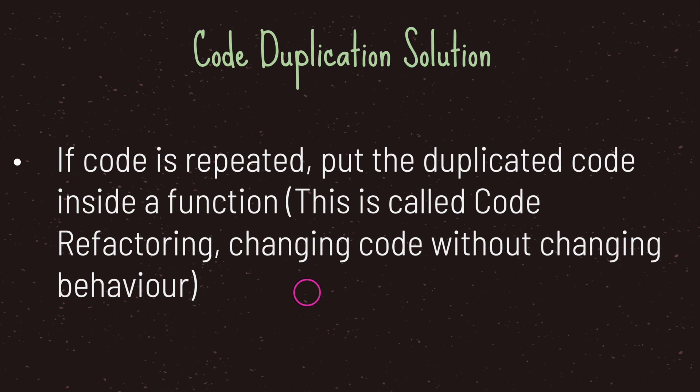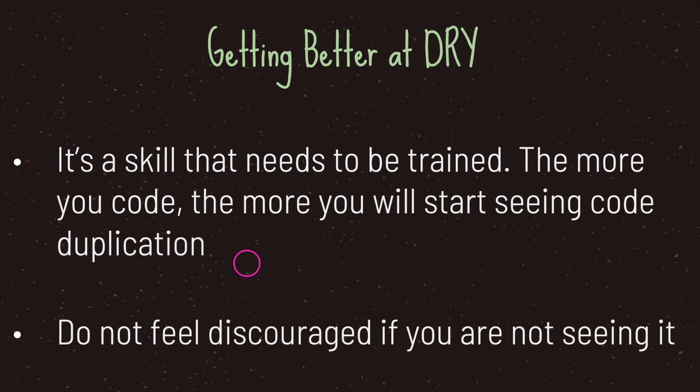The solution is: if code is repeated, put the duplicated code inside a function. We call this code refactoring — changing code without changing the behavior of your code. Understanding and implementing the DRY principle is a skill, and like all skills it needs to be trained. The more you code and practice, the more you'll start seeing code duplication. Don't feel discouraged if you're not seeing it yet — it will take time.